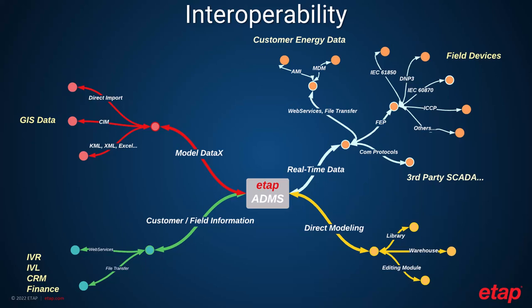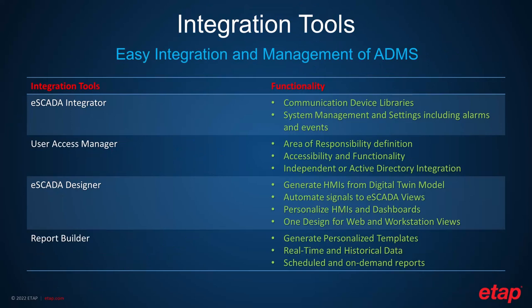In addition, ADMS is expected to have a GIS database as the master source of data for the digital twin. ETAP provides several import programs that allow you to import the entire GIS database as well as incrementally. Automatic import can be set up for typical data changes such as customer connections and disconnections. The following tools are available for easy integration of the ADMS solution. The SCADA integrator allows us to set up the communication between devices and the ADMS system.